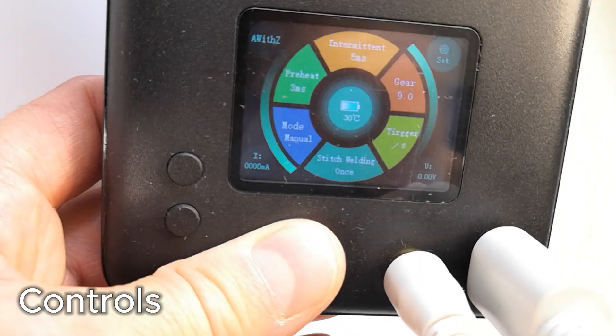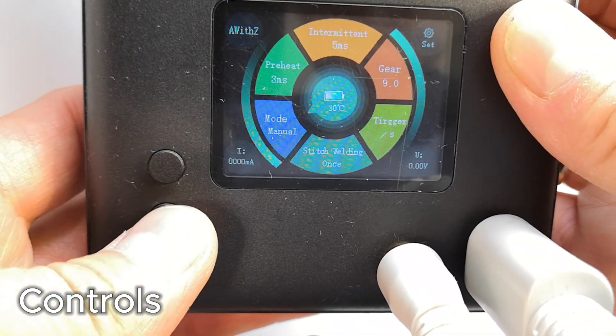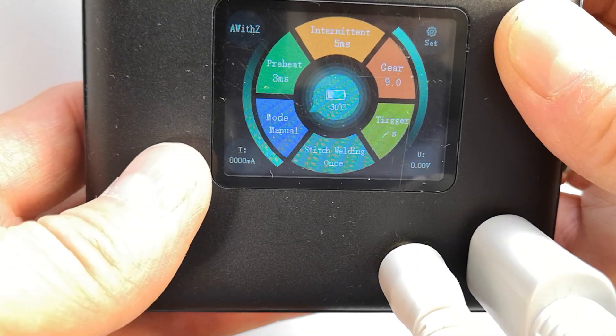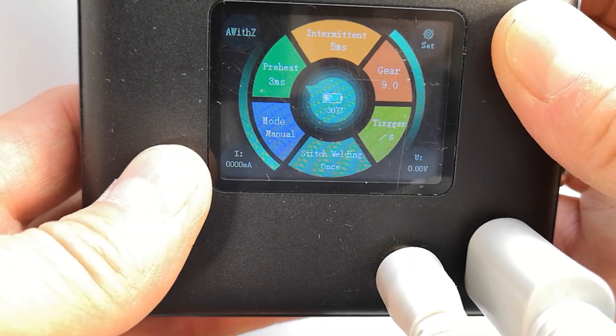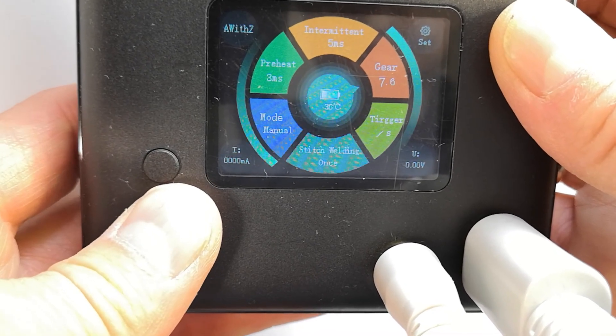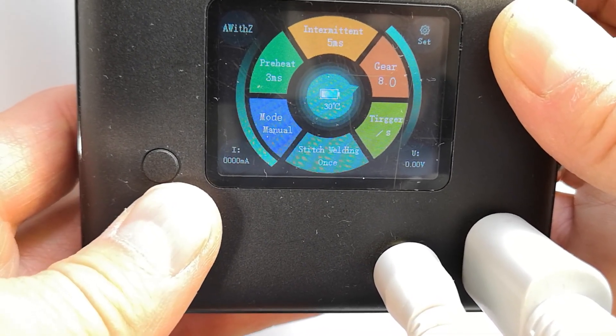You can use a power button to navigate the menu. The device has many adjustable settings. I have noticed that only two settings need to be changed, the others don't really affect much. I select the manual mode, so I can trigger the weld by pressing the button, and set the gear, which means power, to the maximum of 9.